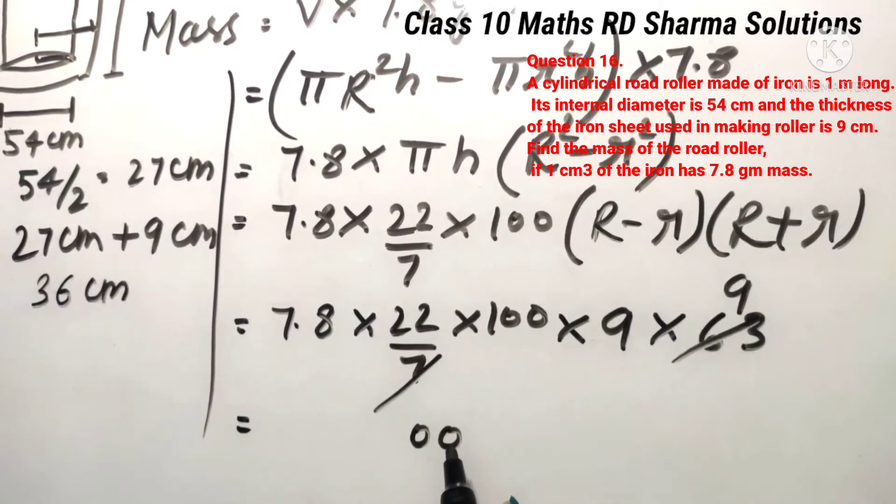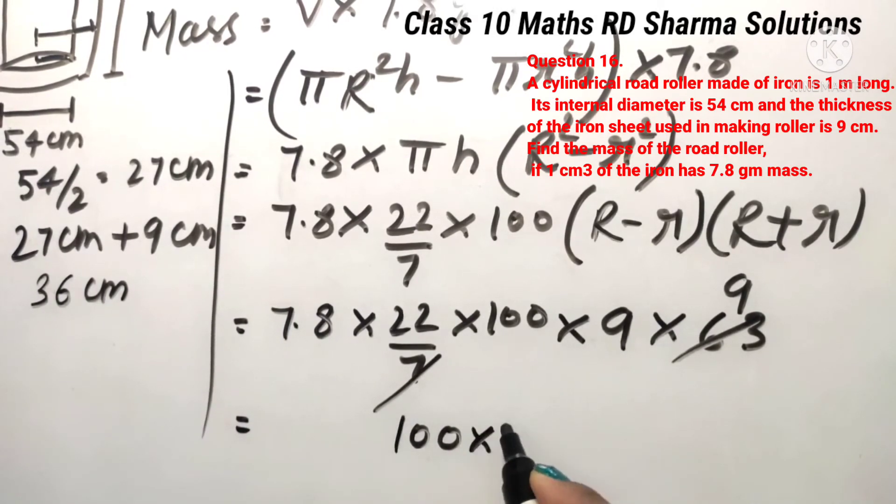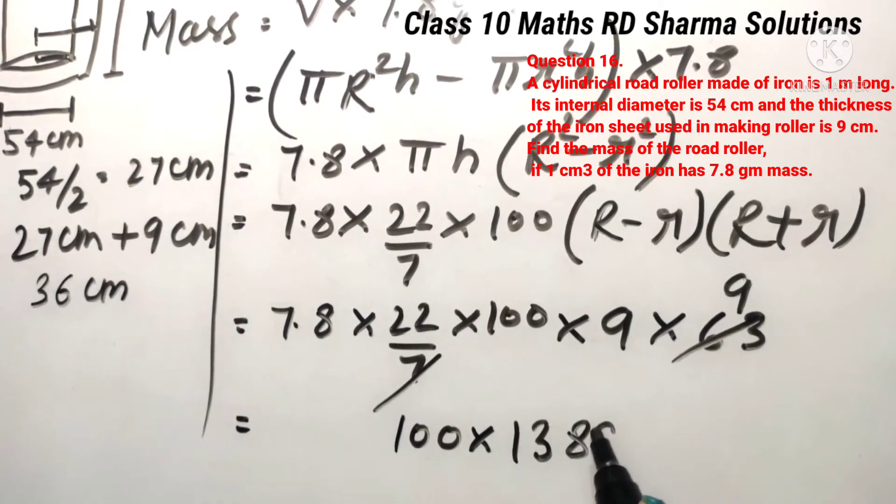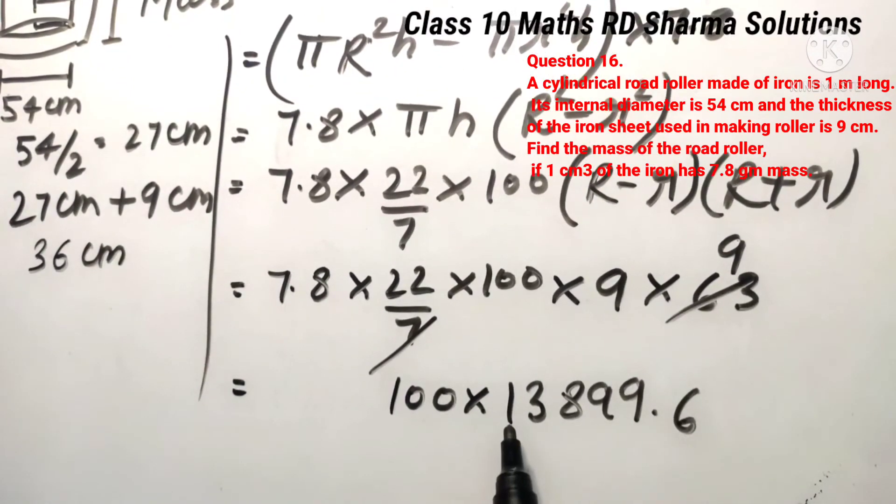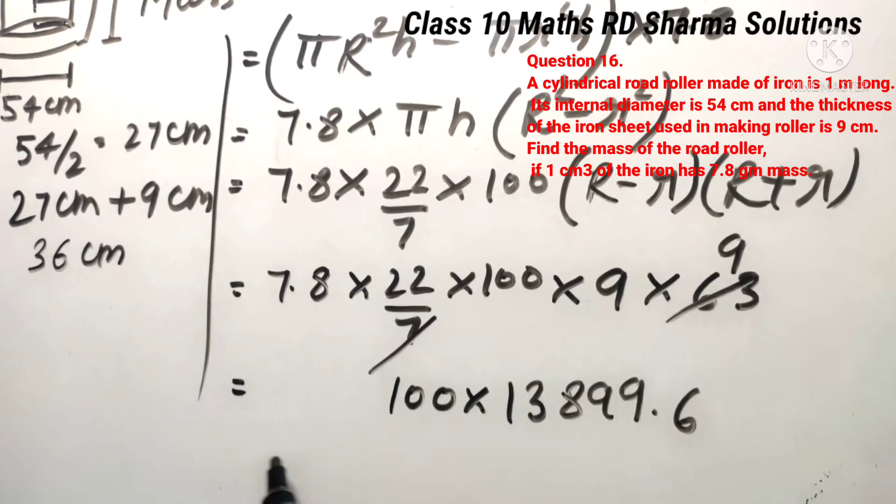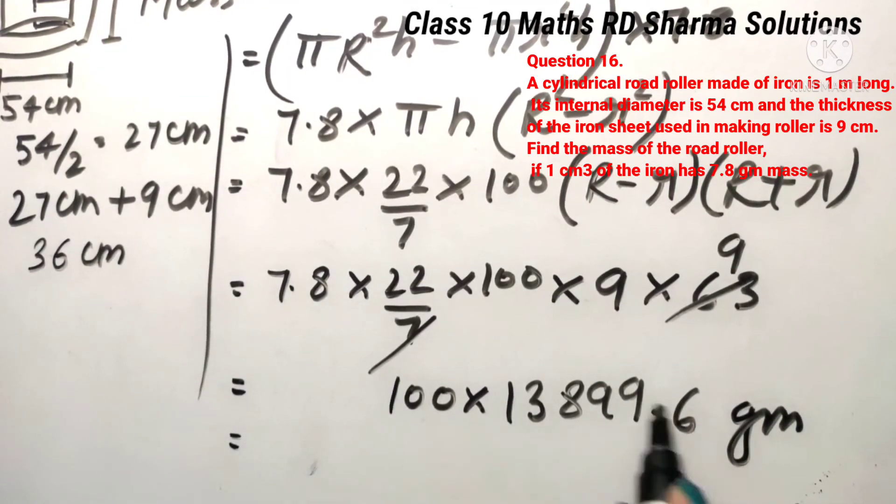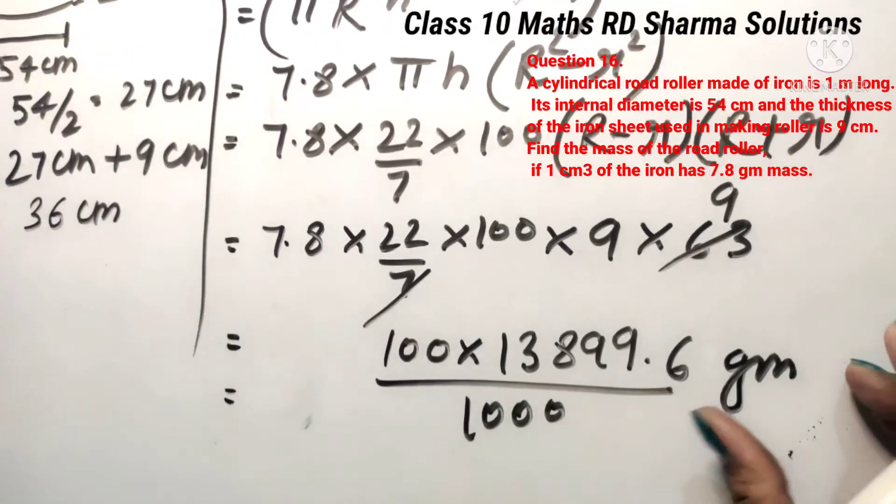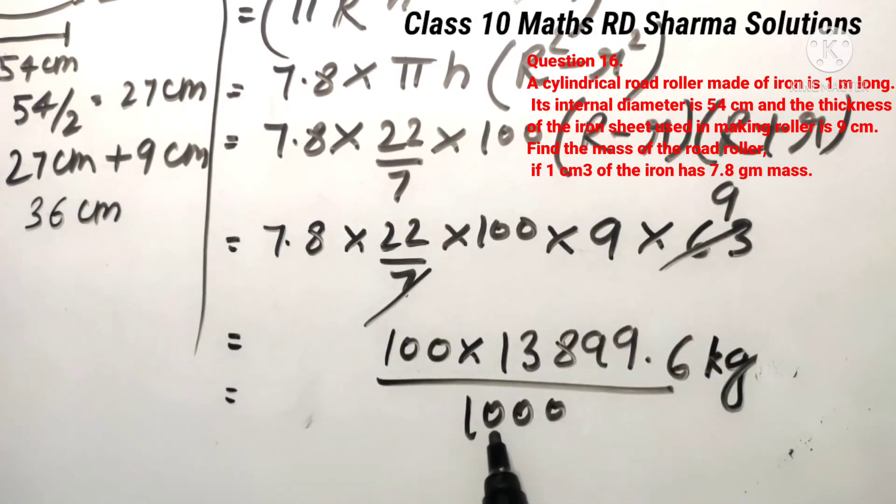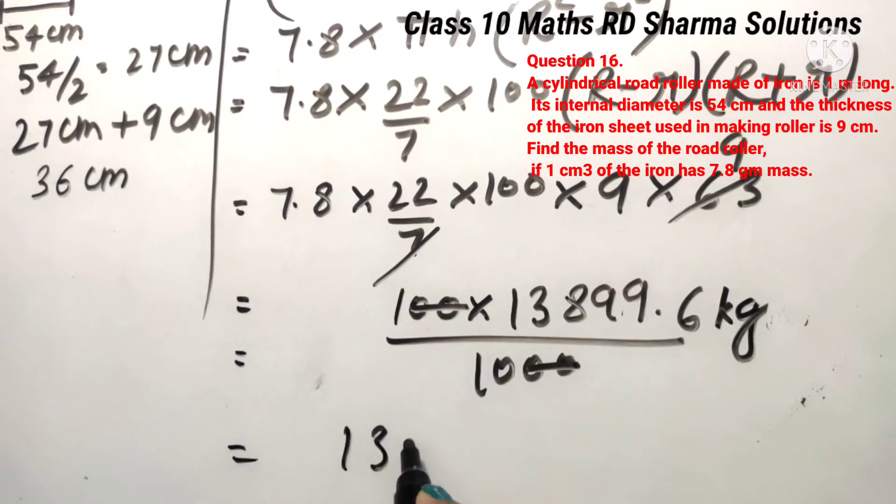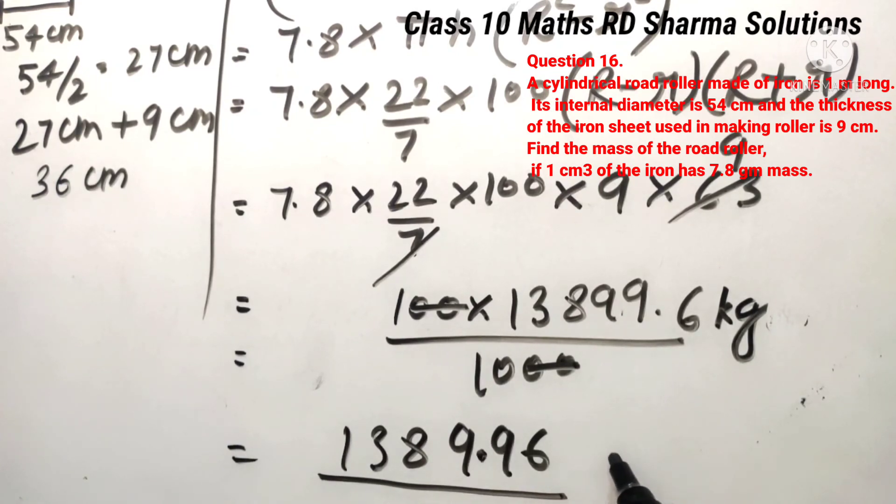100 and all these values are multiplied. 7.8 multiplied by 22 multiplied by 100 multiplied by 9 multiplied by 63. This equals 100 multiplied by 13299.6. Now, 100, the decimal will be here. This value is in gram, so to convert to kilogram we divide by 1000. So this will become kilogram. Two zeros here, one zero. Answer: 1389.96 and answer kilogram here.